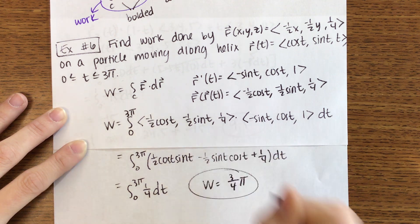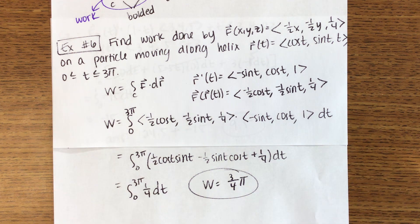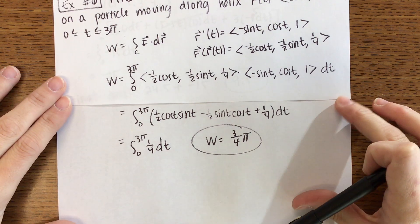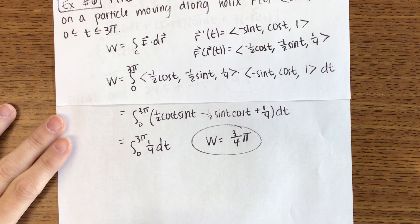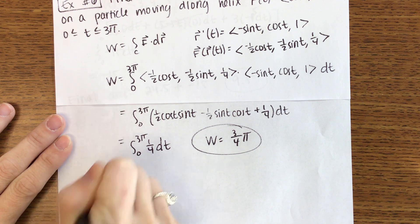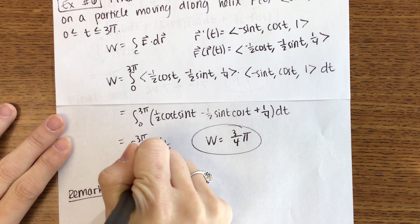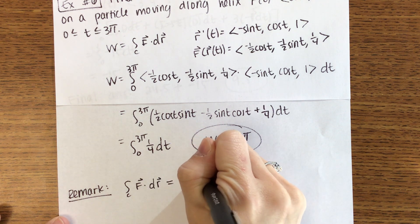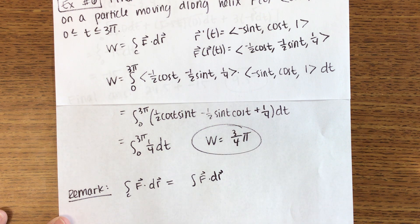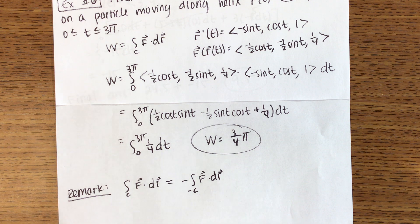Which gives us three-fourths pi. That should be pretty straightforward. Quick remark — something you need to know: this is traditionally how you're going to calculate work. We may choose to reverse the path; the way to show that is negative C, meaning the path is going in the opposite direction. When we do that, work will be the opposite value. If we reverse the path, we will get the opposite value in work.